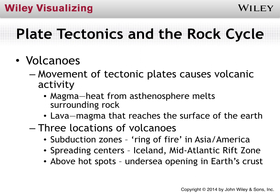Just to clarify a couple of terms: magma is basically rock that has become liquid down below the surface of the Earth. Heat generated in the asthenosphere is hot enough to melt rock in that area — that melted rock is called magma. It's only called lava once it actually gets to the surface of the Earth. It's the same thing — liquid rock — but it's called magma when below the surface and lava when it reaches the surface.